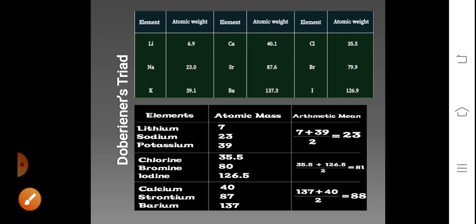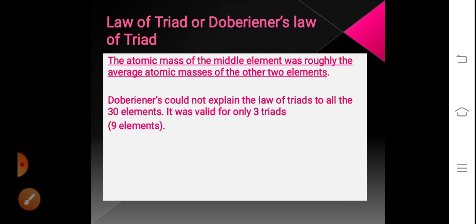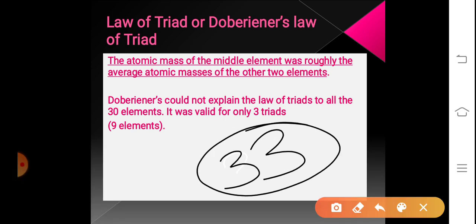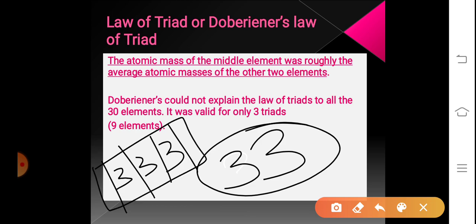As mentioned, there were 33 elements when Dobereiner started to arrange elements, but the law of Dobereiner's Triad was not applicable to all 33 elements. Dobereiner failed to arrange all 33 elements into triads — he could only arrange 3 triads, each consisting of 3 elements, meaning his law was applicable to only 9 elements, not all 33.